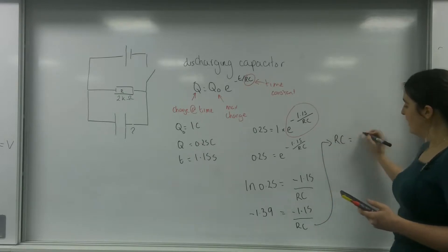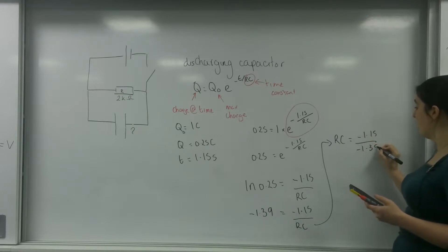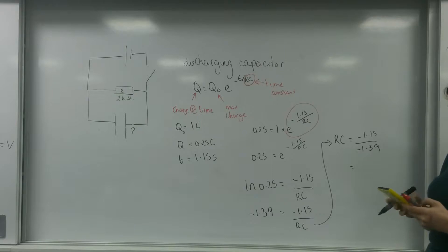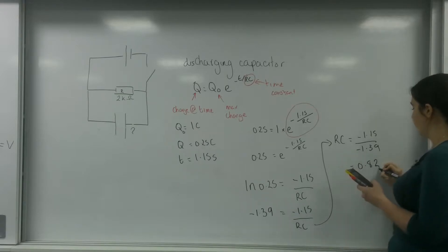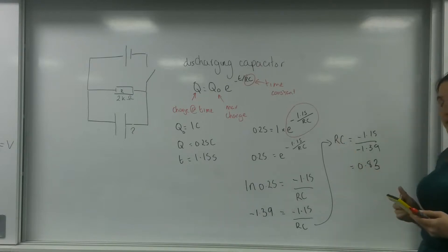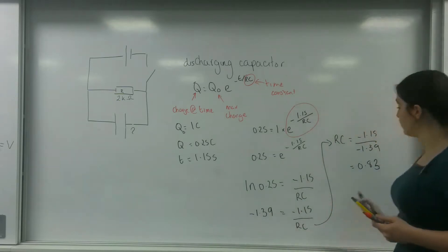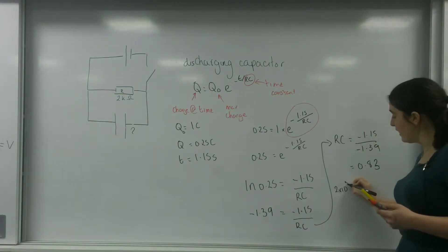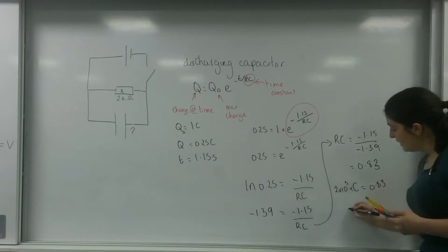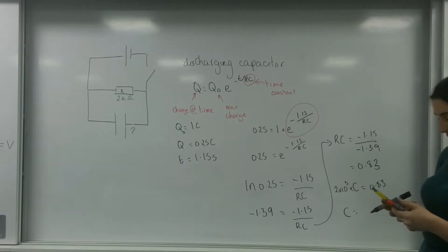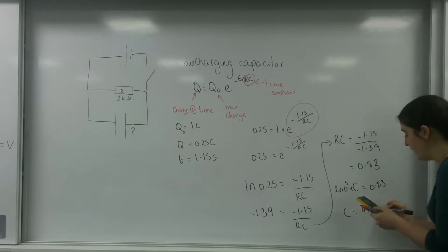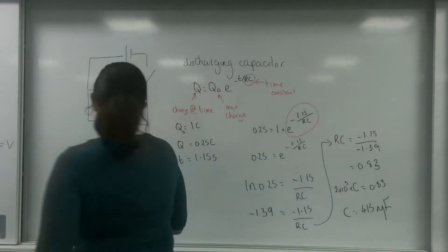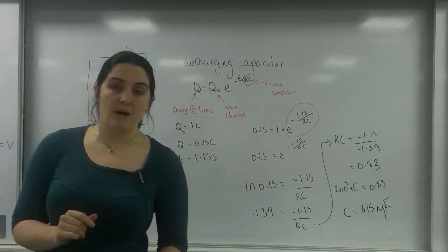So RC equals minus 1.15 over minus 1.39, which gives 0.8283 — so RC equals 0.83. Now, if I know R is 2 kilohms, I can work out C. So 2 times 10 to the 3 times C equals 0.83, giving C equals 0.83 divided by 2 times 10 to the 3, which is 415 microfarads.